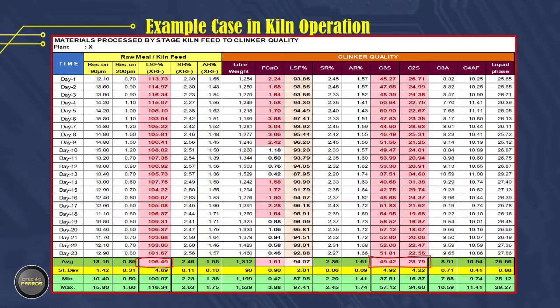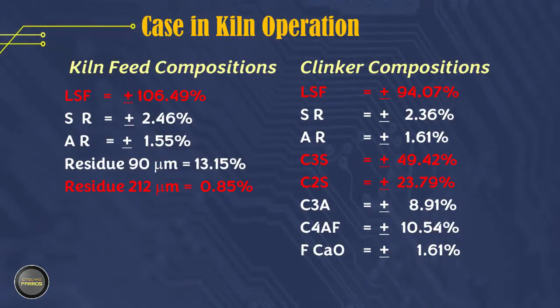From this data analysis we can conclude that there are other factors that cause this to happen. Comparing kiln feed composition and clinker quality composition, the average LSF is 106.49% for kiln feed and 94.07% for clinker — a missing 12% LSF difference. Where did the LSF go? Because the clinker LSF is low, it results in low C3S and high C2S.